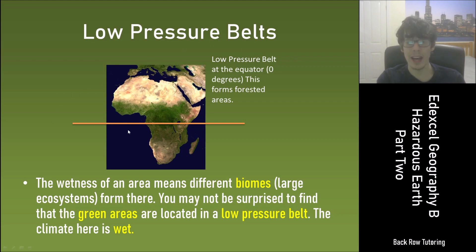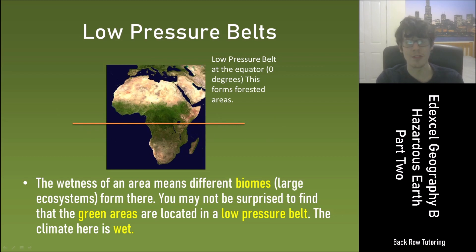Here we're looking at Africa, and this line represents zero degrees, or the equator. Of course it's green around the equator because there's plenty of rain.